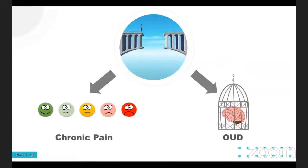So how do we do a better job of getting patients access to the naloxone that they need? The first step is to recognize that we need to look at two separate patient populations in two different ways, because the strategies we use for one patient might be very different than the strategies we use for another. We're going to break our patient population into two groups: patients with chronic pain who are taking prescription opioids, and patients who have opioid use disorder.